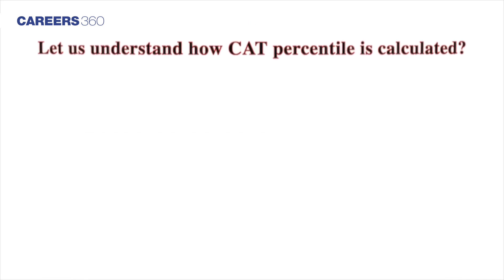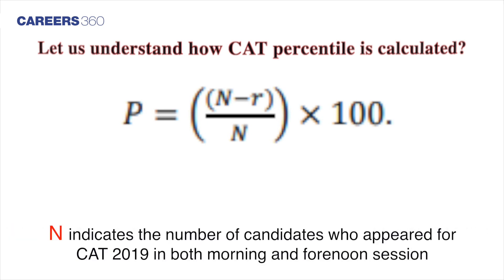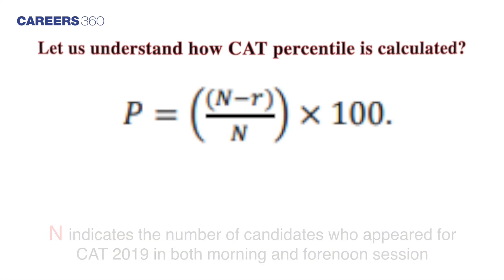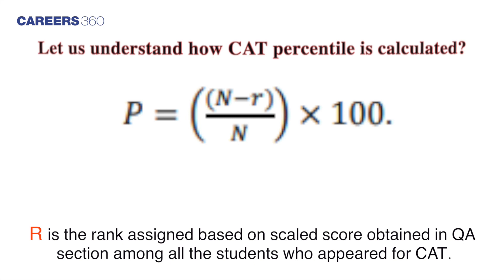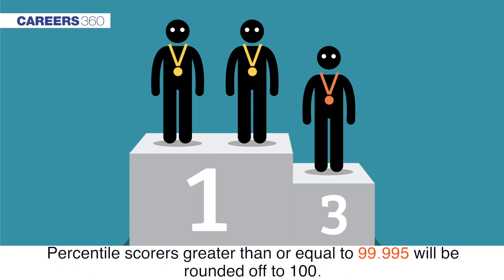Let us now understand how CAT percentile is calculated. CAT percentile is calculated by a specific formula. Let us calculate the percentile for a particular section — quantitative aptitude. N indicates the number of candidates who appeared for CAT 2019 in both morning and forenoon sessions. R is the rank assigned based on scaled score obtained in the QA section among all the students who appeared for CAT. Two candidates scoring similar highest marks in QA will be assigned similar ranks. The second highest score in QA will be assigned the third rank and so on. CAT percentile can be rounded off up to two decimal points. For example, percentile scores greater than or equal to 99.995 will be rounded off to 100.